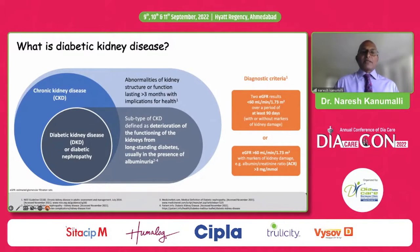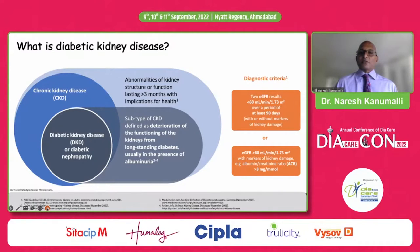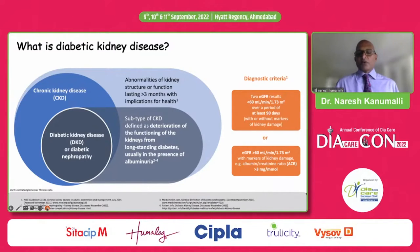Diabetic kidney disease or diabetic nephropathy is a subtype of CKD. The diagnostic criteria has changed — it requires two eGFR results less than 60 mL per minute, or eGFR greater than 60 with markers of kidney damage. Even just having a raised albumin-creatinine ratio qualifies you as having chronic kidney disease — that's an important marker to understand.